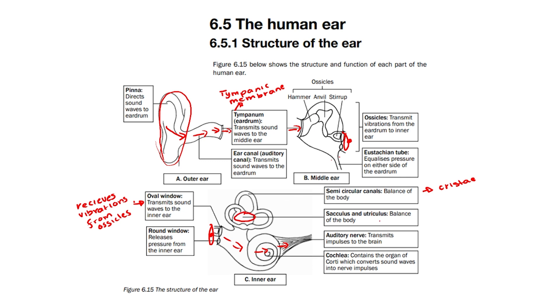We also have the sacculus and utriculus, which also aid in balance of the body. The receptors found in these structures are known as the macula.